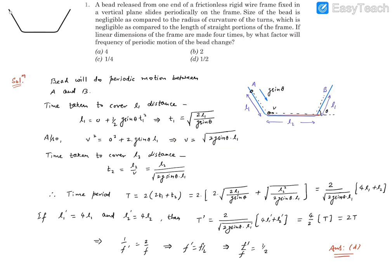Now we can easily find out how much time it takes in the horizontal segment. Let's say that time is t₂ to cover l₂ distance. This is going to be l₂ divided by v because it's moving with constant velocity. l₂ is the same and v can be substituted from there.